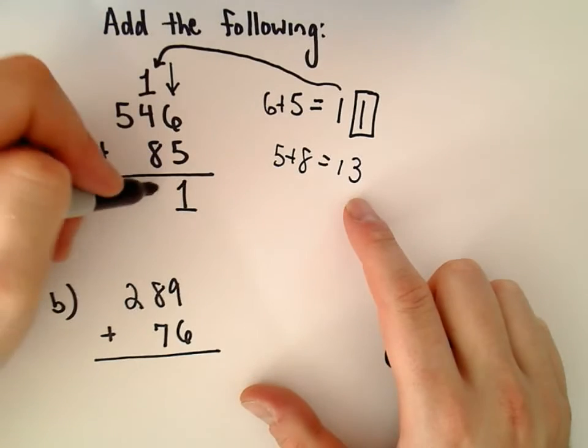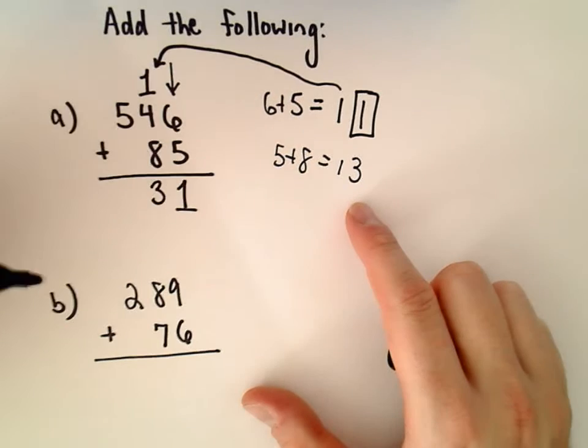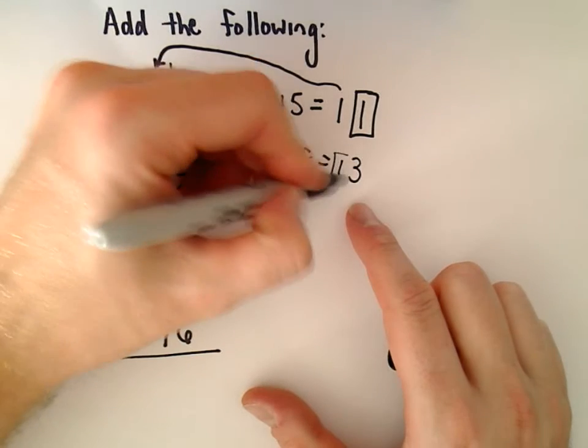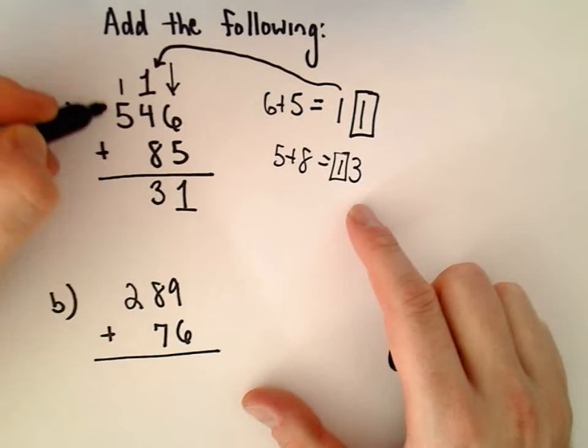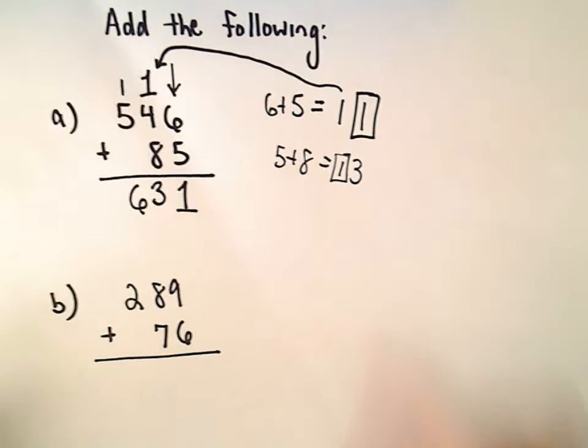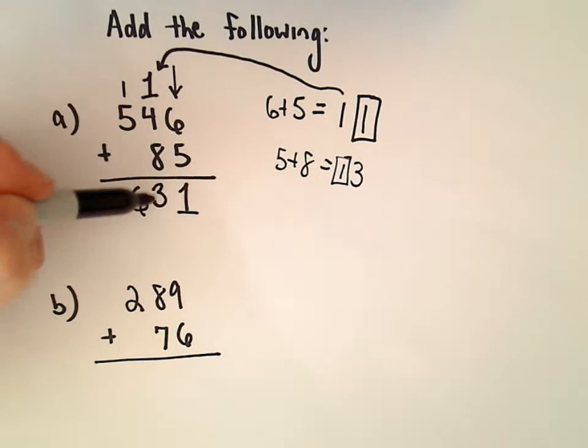So in this case, I'm going to drop my 3 down, and now I'm going to carry, again, the digit, the 1, over to the next column. And 1 plus 5 is going to be 6. So 546 and 85 gives us 631.